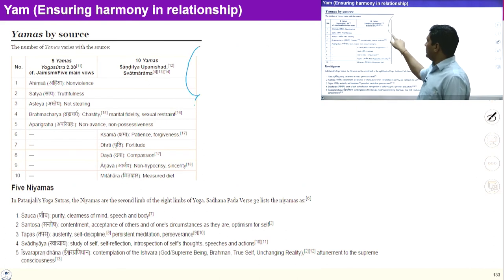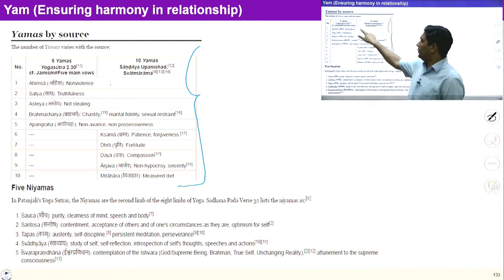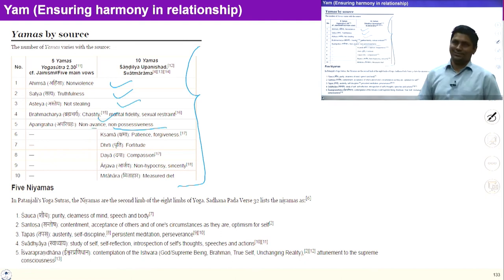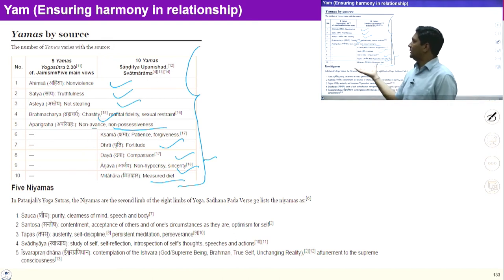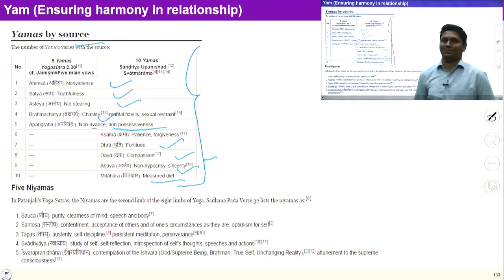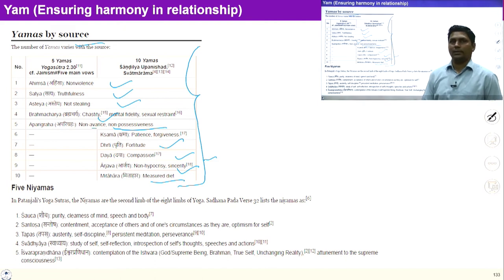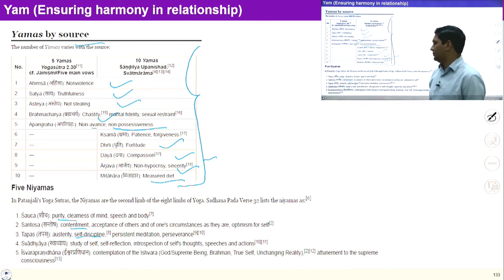So far we have talked about these ten principles under Yam: non-violence, truthfulness, non-stealing, chastity, non-possessiveness, forgiveness, fortitude, compassion, sincerity, and measured diet. Now we will try to understand five Niyams: purity, contentment, self-discipline, study of self, and contemplation of Ishwar. Niyam is mainly associated with self-improvement and self-purification. To be organized at the level of mind and body, five more principles have been identified which are called Niyam.